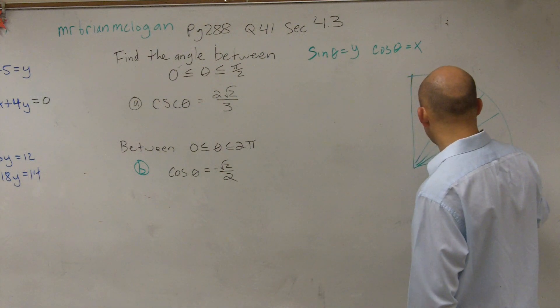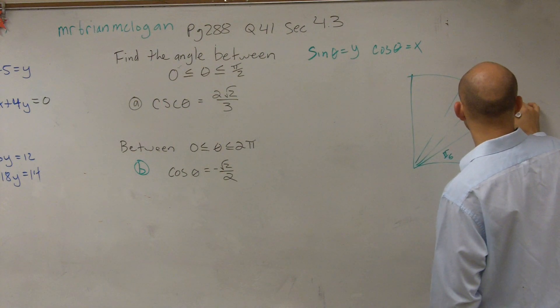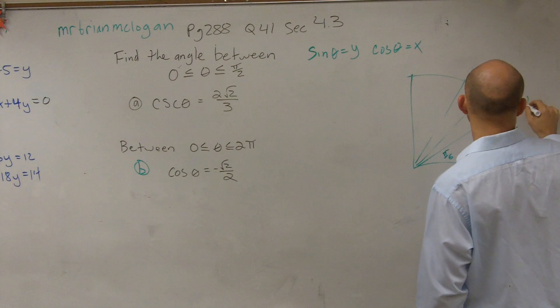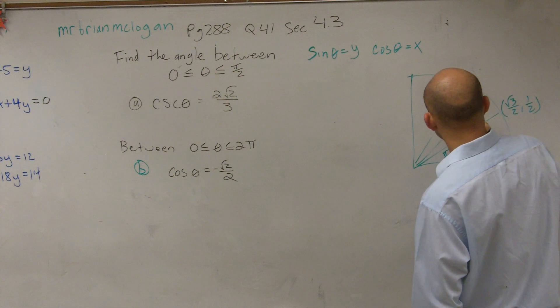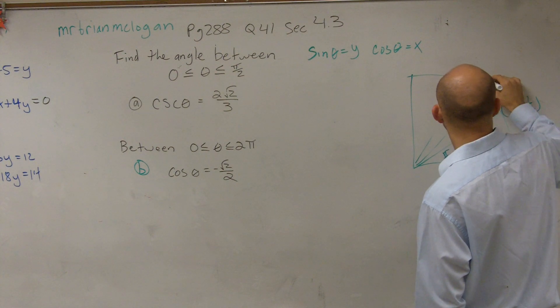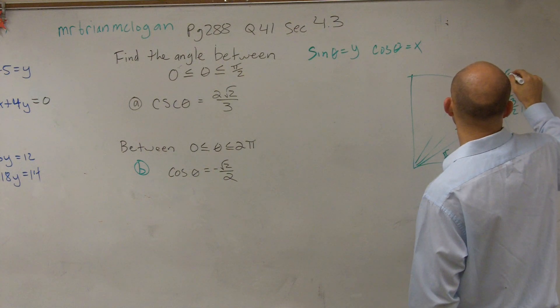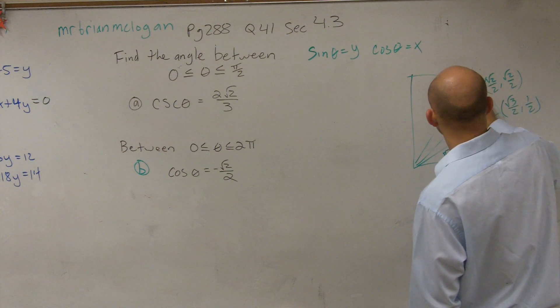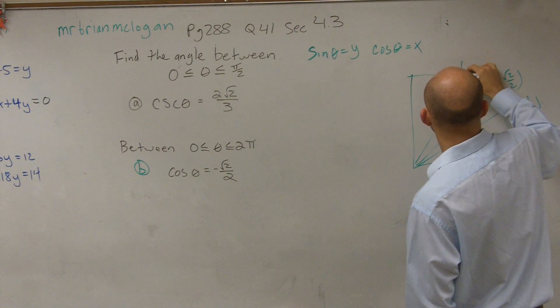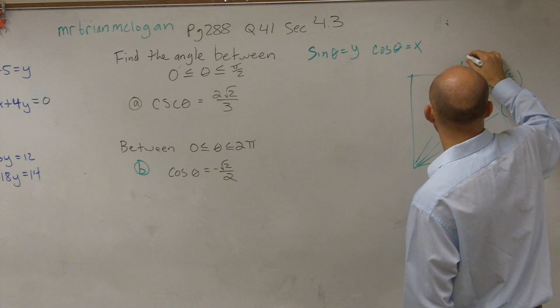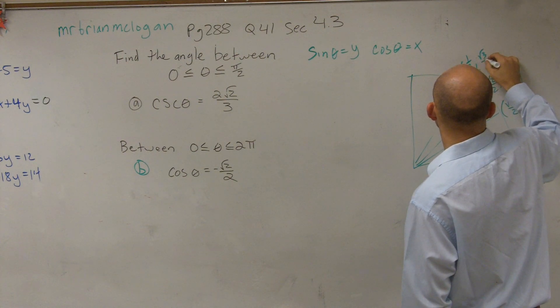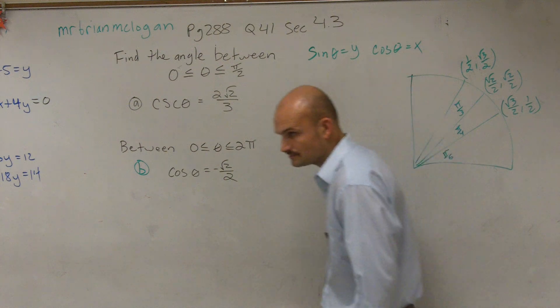So we said if we had like π/6, remember that point was √3 divided by 2, 1/2. The angle π/4, we had √2/2, √2/2. And for the point or the angle π/3, we have 1/2, √3/2.